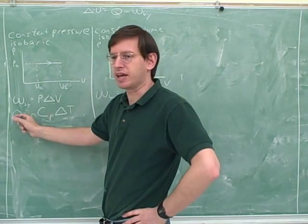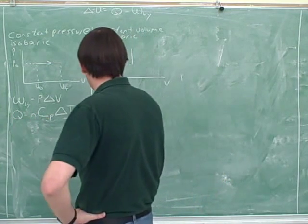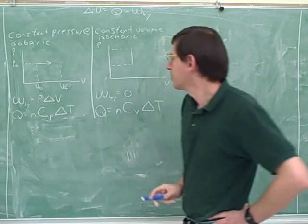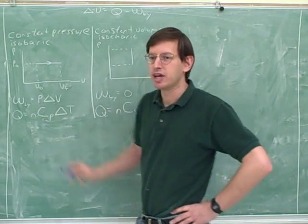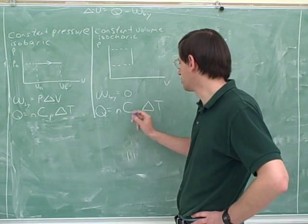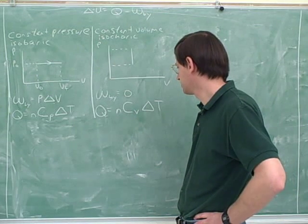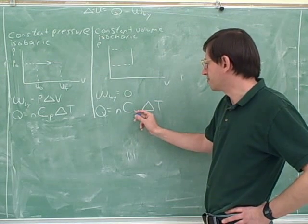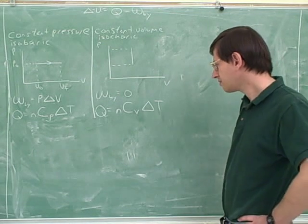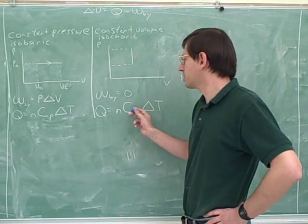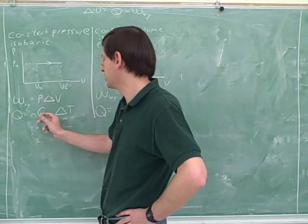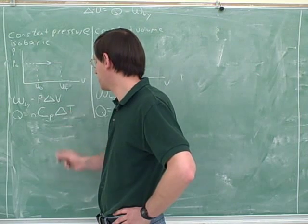How can we figure out the heat being exchanged here? We can use a very similar formula, except this symbol stood for the molar specific heat at constant pressure. Logically now we should use the molar specific heat at constant volume — C sub V. This tells us how much heat it takes to raise the temperature of one mole of gas by one degree Kelvin holding the volume constant, while C sub P tells us the same at constant pressure.